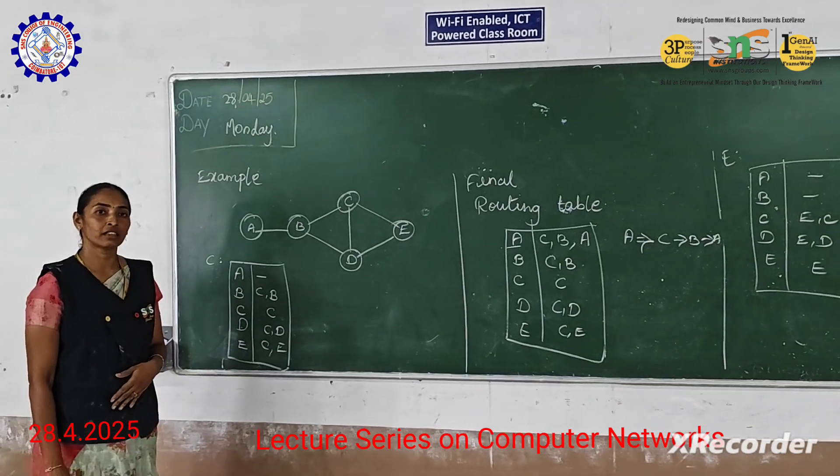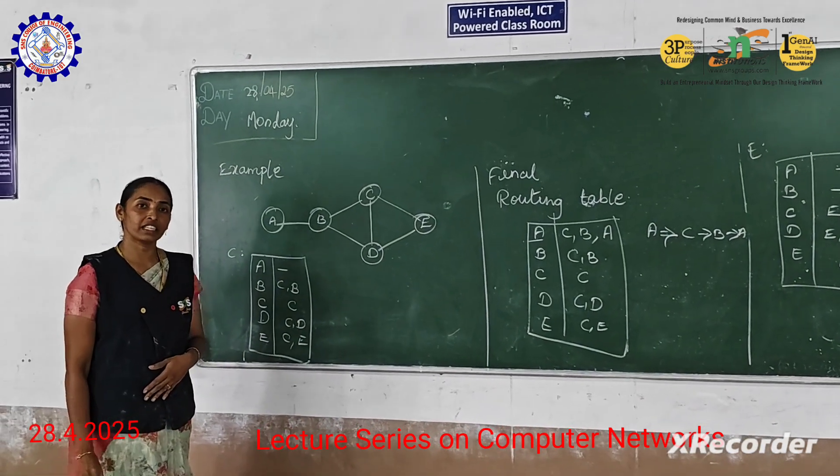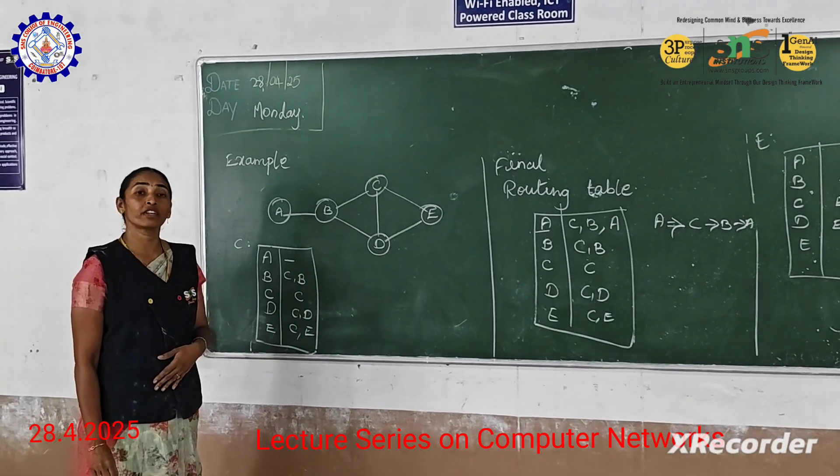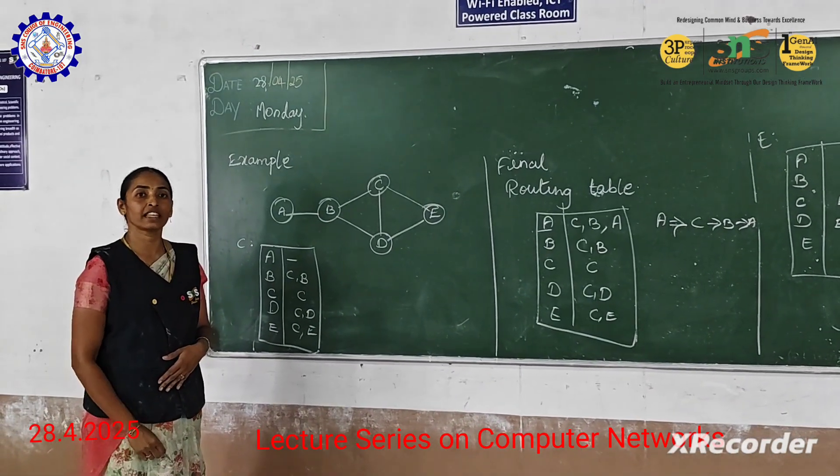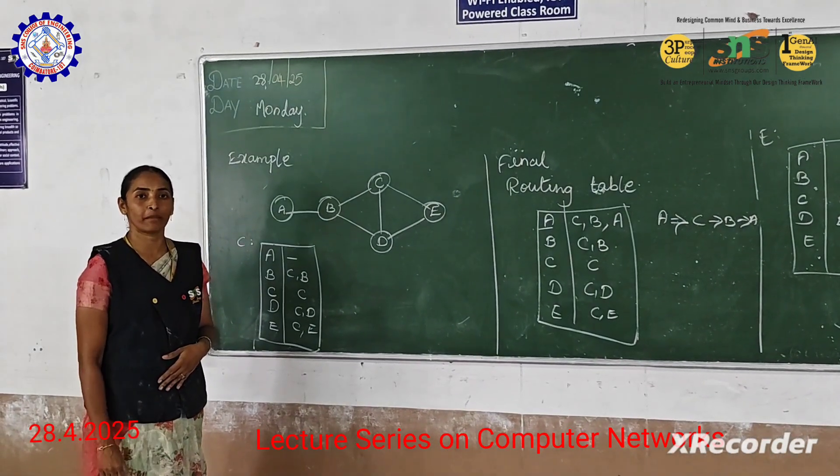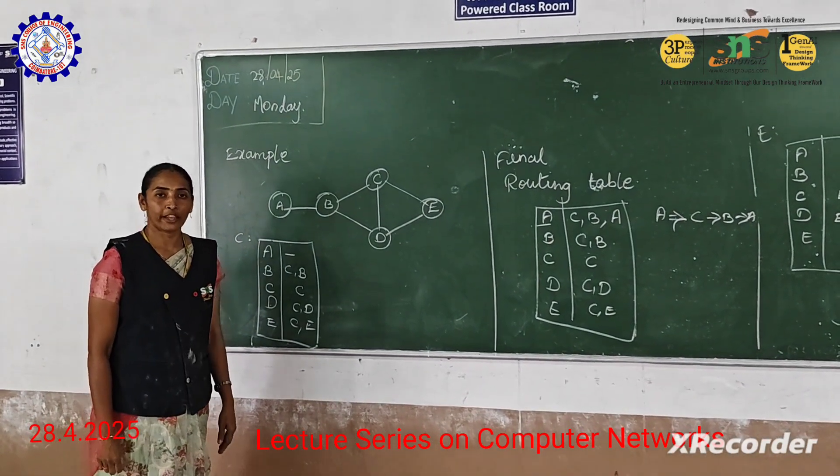Likewise, how to calculate each elaborate distance — unknown distance — in the initial routing table. Thank you.